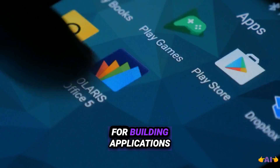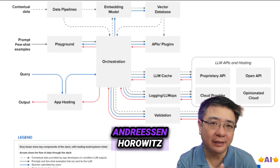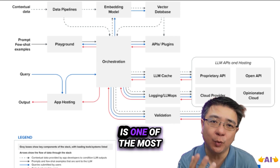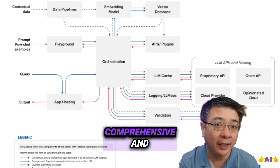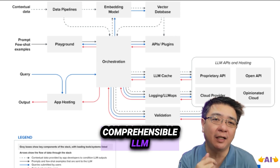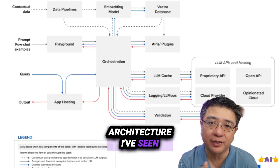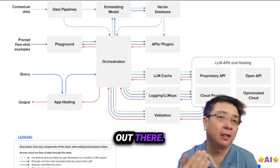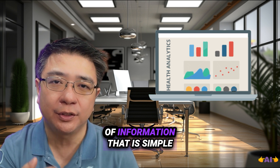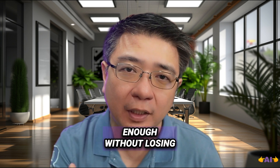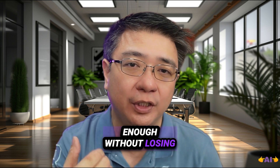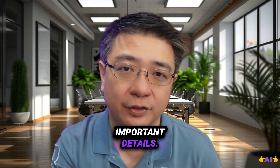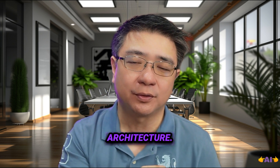In this episode, we will talk about a tech stack for building applications using large language models. This diagram from Andreessen Horowitz is one of the most comprehensive and comprehensible LLM architectures I've seen out there. It includes the right amount of information that is simple enough without losing important details. So let's break down this architecture.